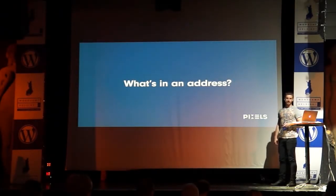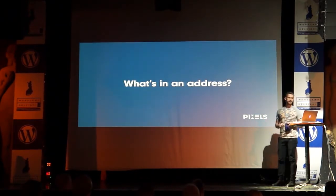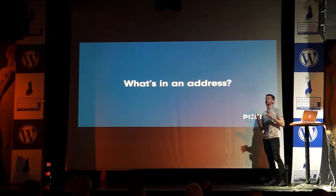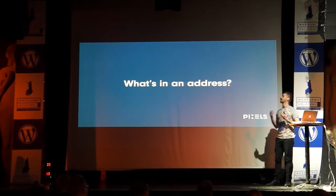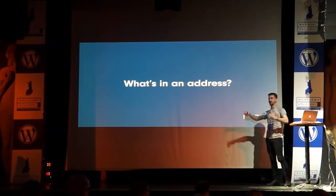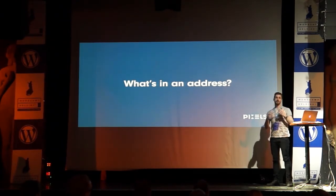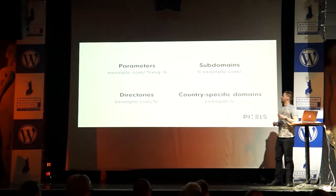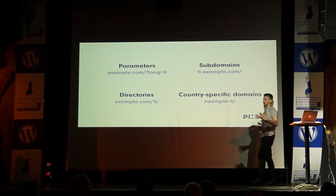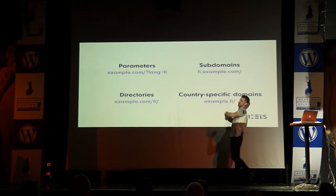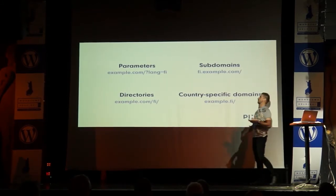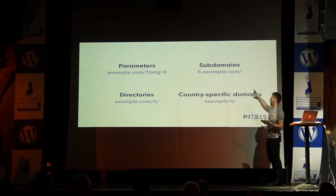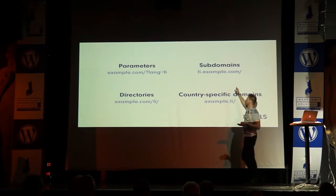The next thing I'm going to talk about is addresses — URIs, if you want to be fancy. This is important for UX because, while it doesn't help the user directly, it gives users a little bit of an indication about what they're seeing and how your website is structured. Subconsciously, a lot of users take in a lot of information when they see URLs — though unfortunately Safari is now cutting out everything except the domain name, which kind of sucks. Using Polylang, these are the four options you're given. I'd cut out parameters because they're bad for everything. I'm also not a big fan of subdomains.